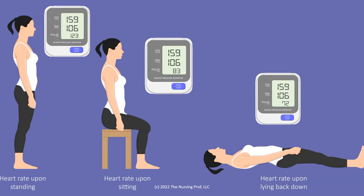Compensation in the body occurs because we want to maintain homeostasis when we move from one position to another. When you take a look at these diagrams here, you see we have our heart rate and our blood pressure when the patient is laying down. In order to maintain that same blood pressure as we sit up and then stand, the heart rate would increase. We also get some vasoconstriction as well.